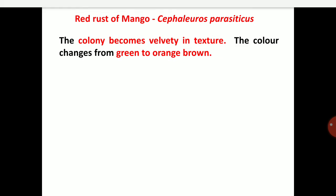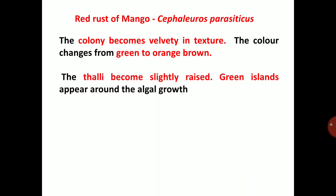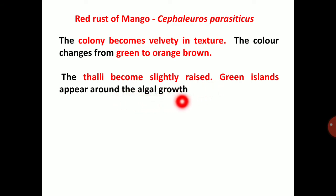The colony becomes velvety in texture. The color changes from green to orange-brown. The thalli become slightly raised and green islands appear around the algal growth.